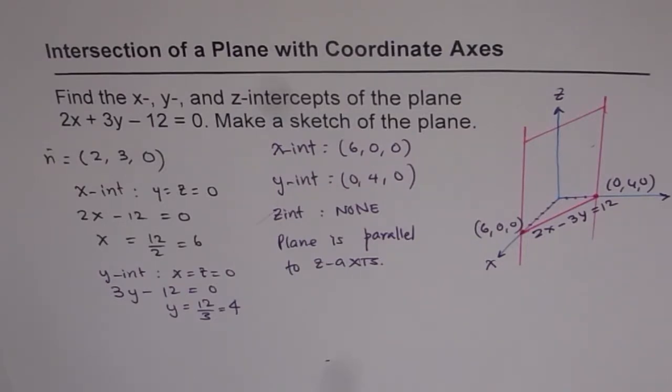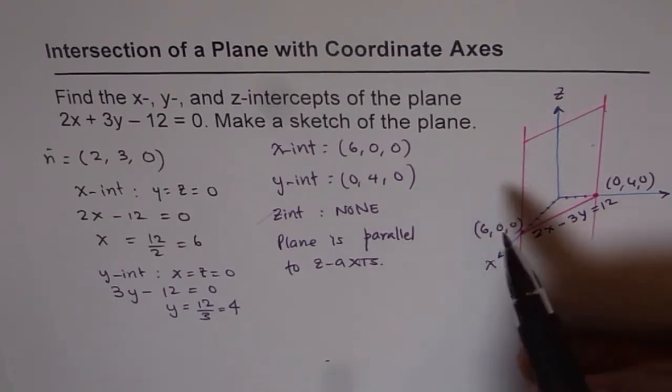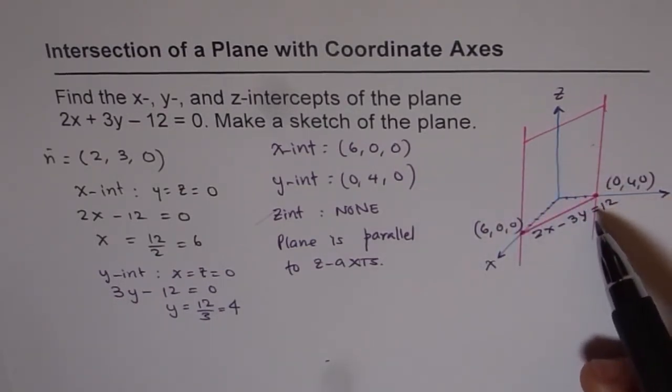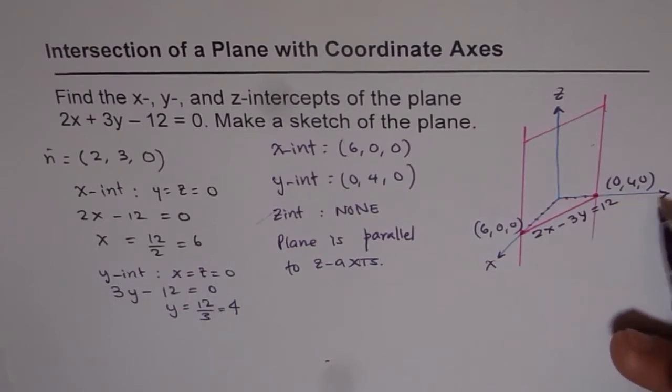So that is how we can sketch planes by finding intercepts with x, y, and z axes. So hope you learned from here: how to find x, y, z intercepts, how to sketch a plane, and also how to find intersection of a plane with another plane, x-y plane or y-z plane, things like that. Thank you.